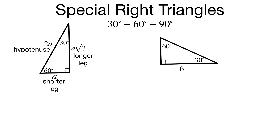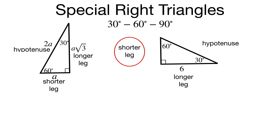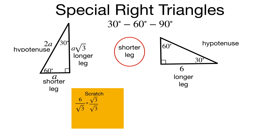In our second example, one of the leg lengths is 6, but it's opposite the 60-degree angle, so 6 is the longer leg. I need to find the shorter leg and the hypotenuse. The shorter leg times the square root of 3 gives the longer leg, so to get back to the shorter leg we divide by the square root of 3. Since 6 over the square root of 3 divides by an irrational number, I need to rationalize: multiply by the square root of 3 over the square root of 3. The numerator gives 6 times the square root of 3, and the denominator gives 3. Simplifying, 6 over 3 is 2, so the shorter leg is 2 radical 3.